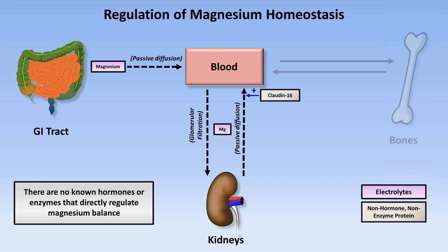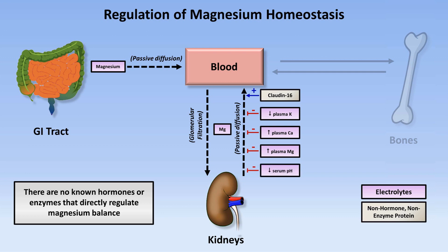That's not to say there aren't any, just that we don't understand them yet. However, what regulation we do know about occurs mostly in the renal tubule, where a number of metabolic derangements affect magnesium reabsorption. Derangements which prevent reabsorption and thus lead to hypomagnesemia include low potassium, high calcium, high magnesium obviously, and finally low serum pH.